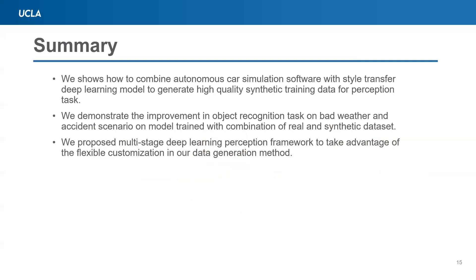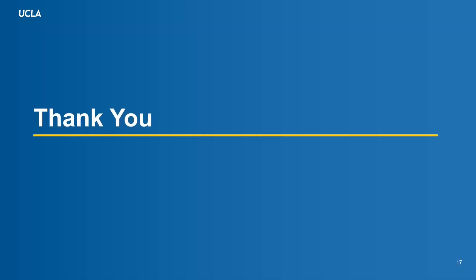In summary, we have shown how to combine autonomous car simulation software with a style transfer deep learning model to generate high-quality synthetic training data for perception tasks. We also demonstrate improvement on object recognition tasks in bad weather and accident scenarios when training on the combination of real and synthetic datasets. We also propose a multi-state deep learning perception framework to leverage the flexibility of our data generation method. Thanks for listening, and we will take any questions you may have.